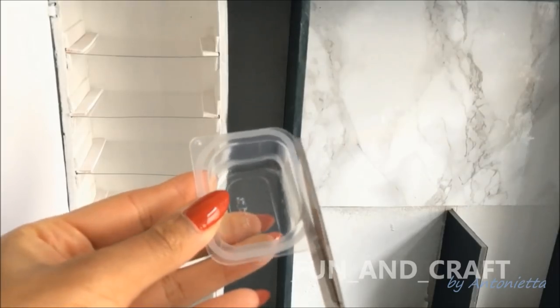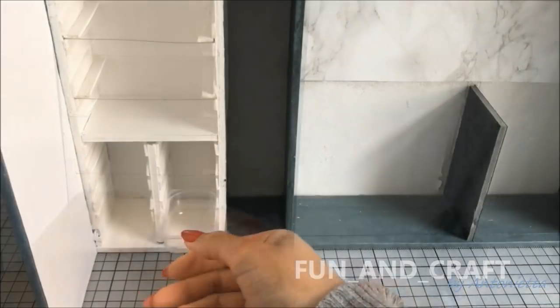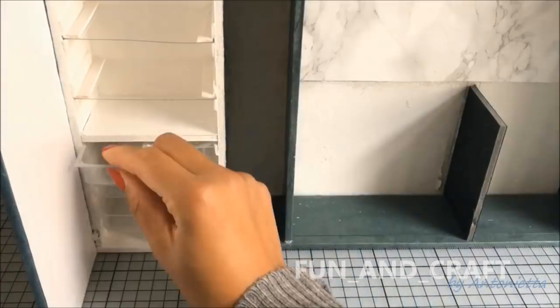Empty and clean a small jam container. Cut it to fit into the lower part of the fridge. Use five more of them to make see-through storage boxes.